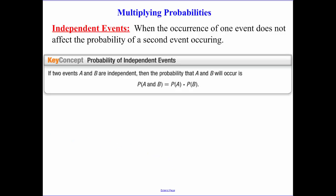Today we're going to be talking about multiplying probabilities and independent events when the occurrence of one event does not affect the probability of the second event occurring.